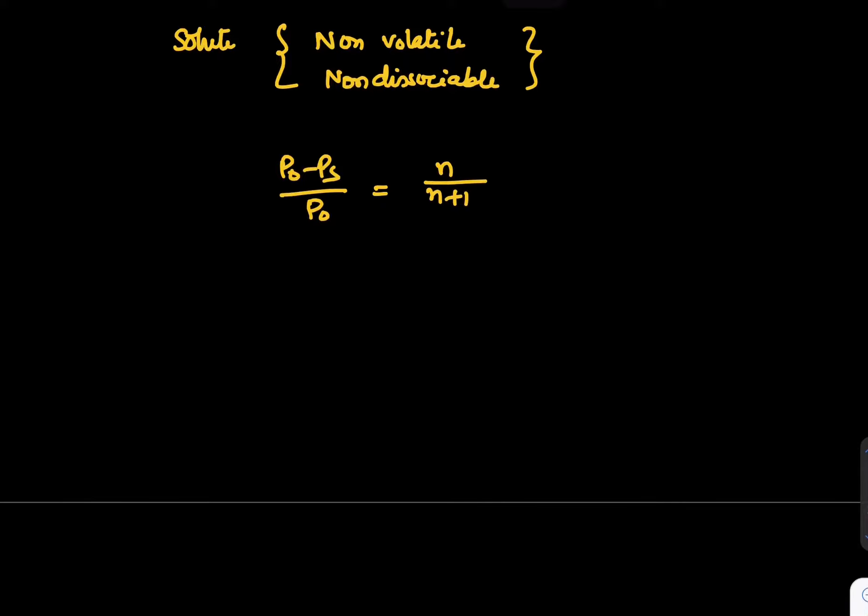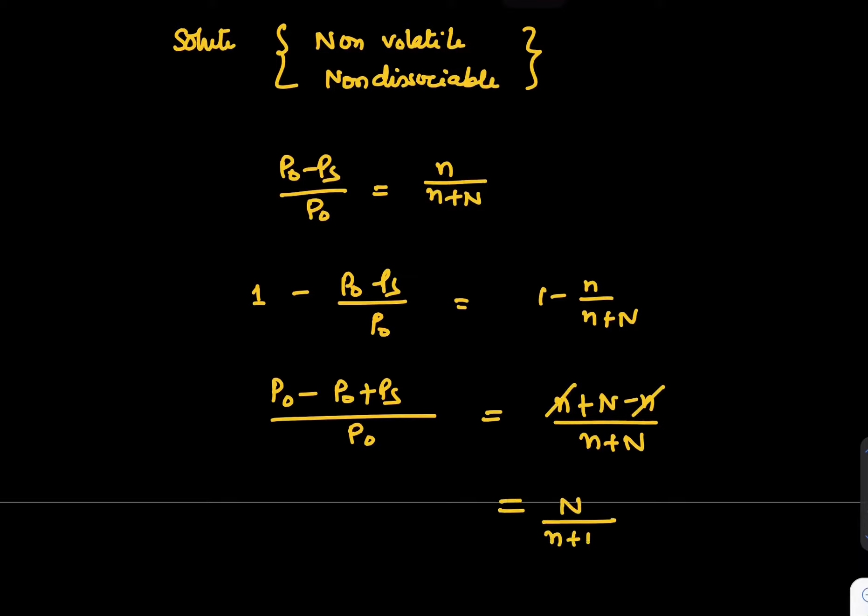Now let's do one thing, let's write 1 minus this number P naught minus PS upon P naught, so this is also 1 minus n upon n plus N. Let's solve this. P naught minus P naught plus PS upon P naught will be equal to n plus N minus n upon n plus N.